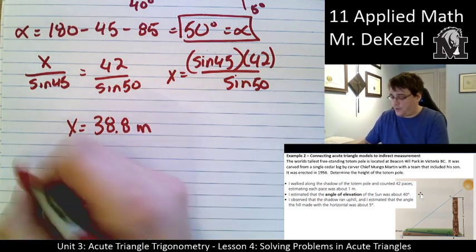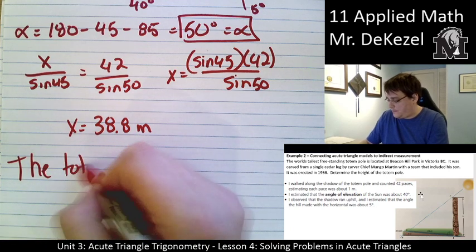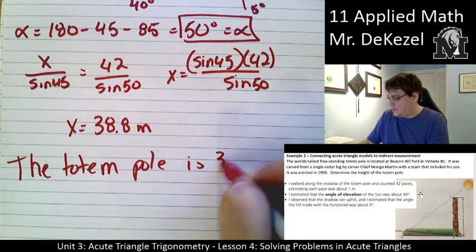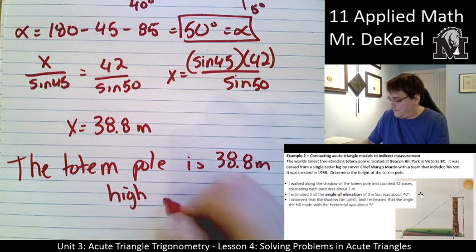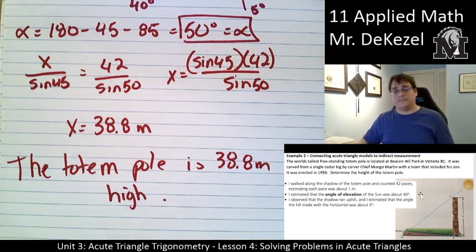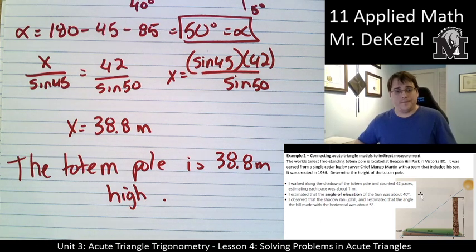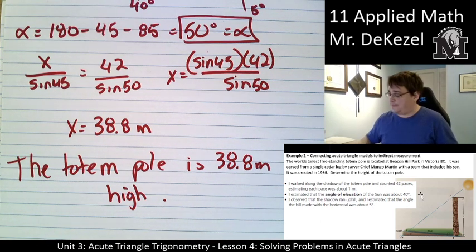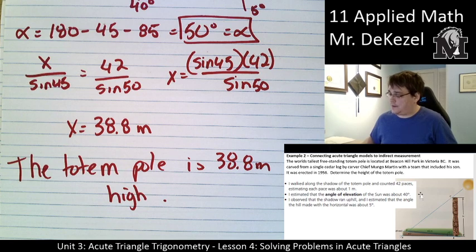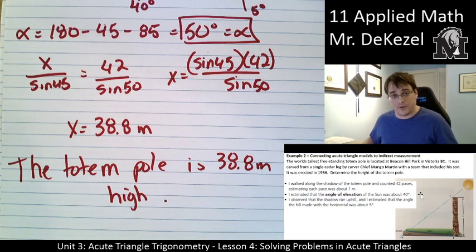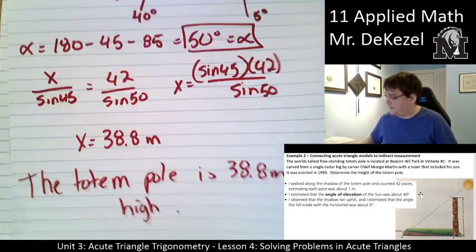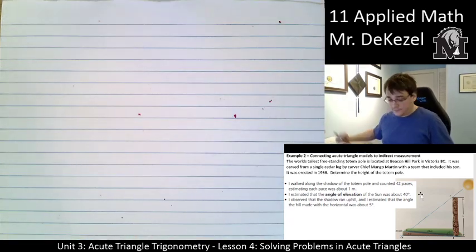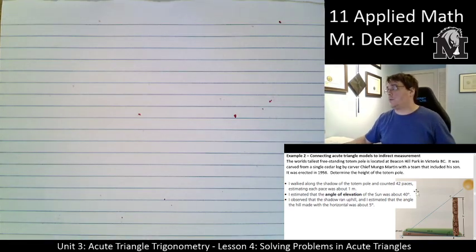And we would find x or the height of the totem pole to be 38.8 meters. So the totem pole is 38.8 meters high. If there are any particular questions, please let me know. But we just used a bunch of our angle rules until we found enough angles and sides that we could use the sine law.